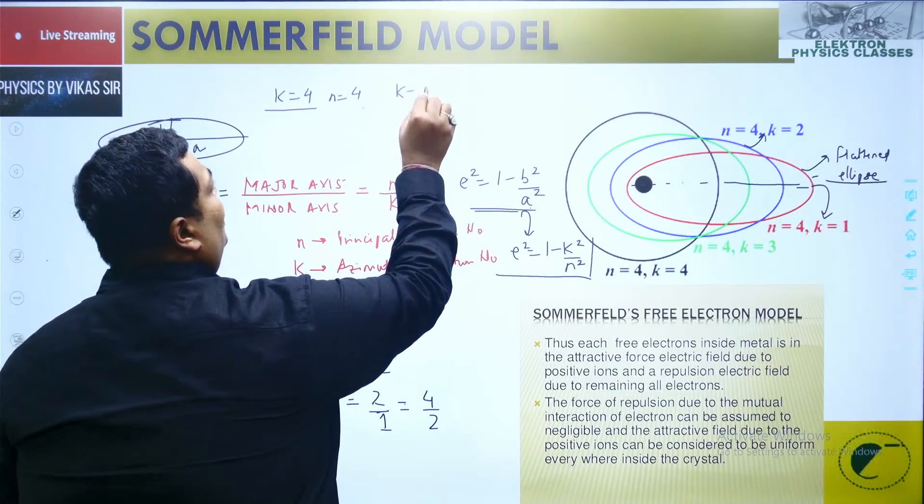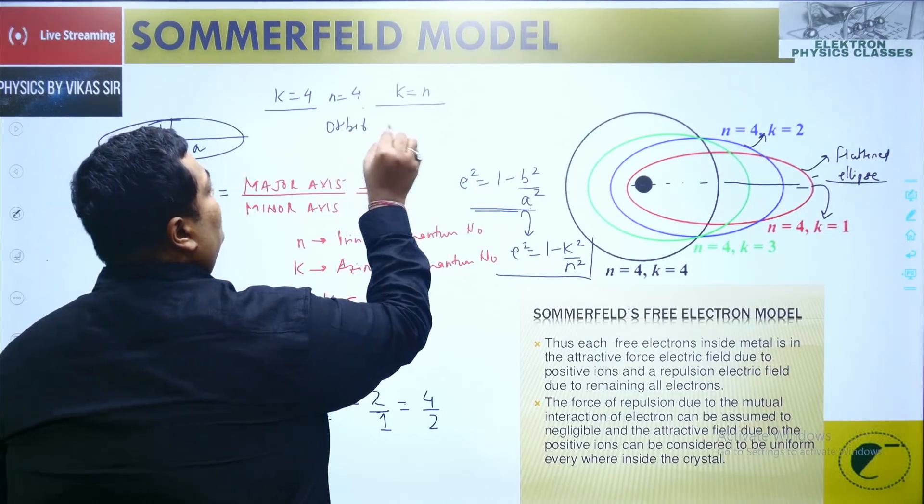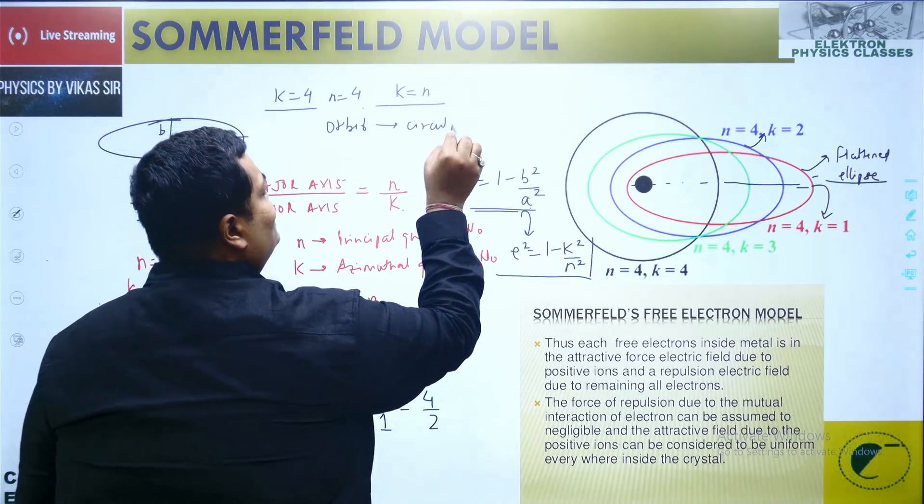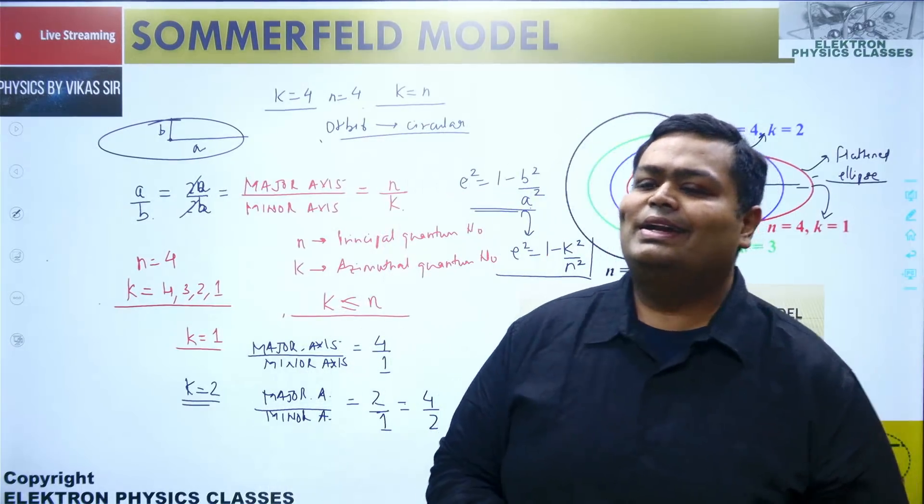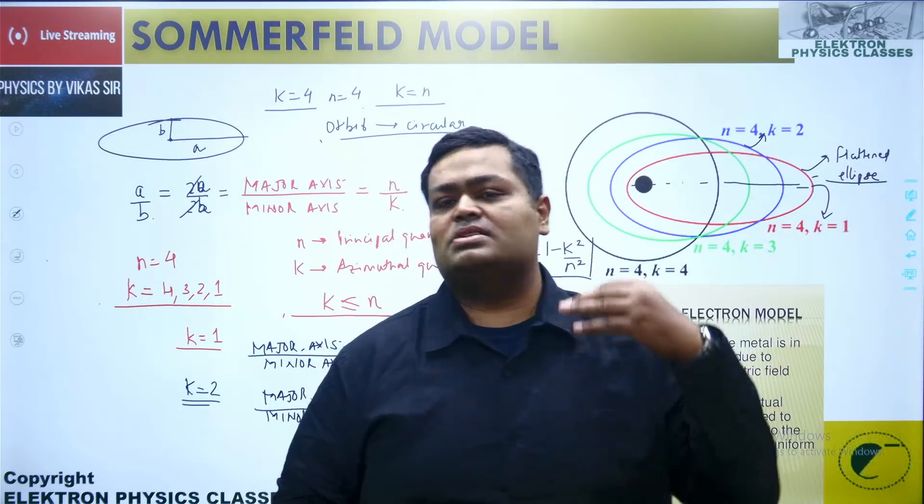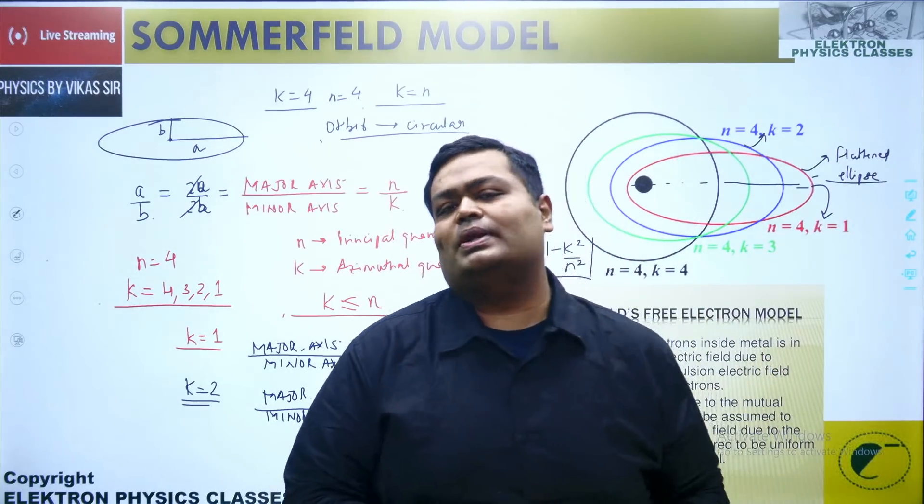So for n equal to 4 and k equal to 4, that means the k value becomes equal to n, we get the orbit as circular. That means hence it is known as a Bohr-Sommerfeld model, because it actually explains to you the elliptical orbits' existence also and also explains the existence of the circular orbit.